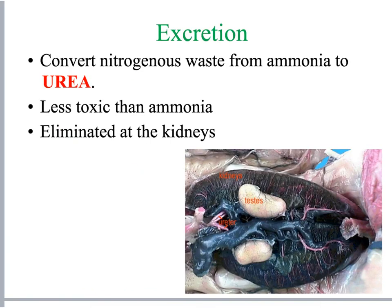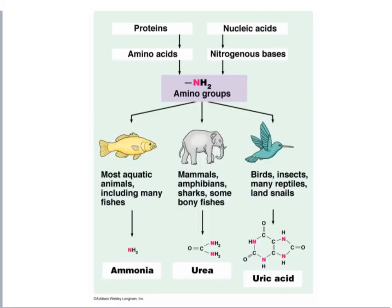For excretion, the frog takes the nitrogenous waste of ammonia and converts it to urea, which is different from what happens in the fish. Urea does not have the same toxicity as ammonia, and once processed, urea gets passed through the kidney. In aquatic fishes and aquatic animals, amino groups are broken down into ammonia; in mammals, amphibians, sharks, and bony fishes, they produce urea; and in birds, insects, reptiles, and land snails, the amino groups are broken down into uric acid.